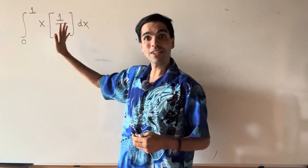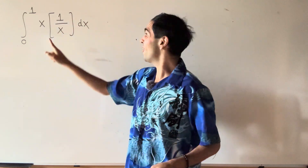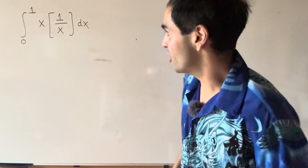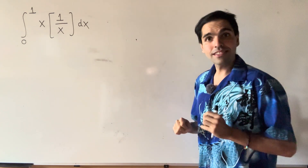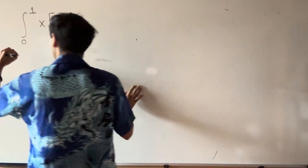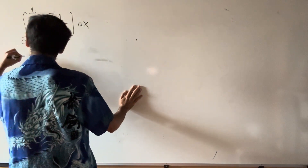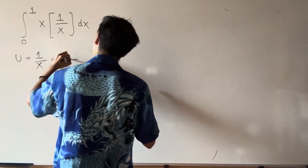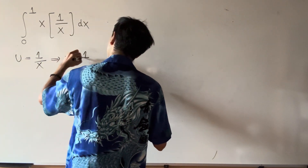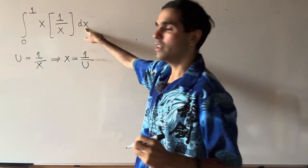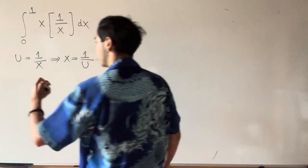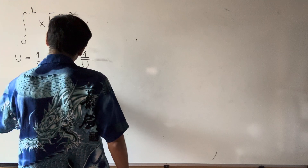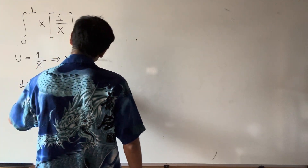The important thing is the answer is not 1, because you cannot cancel out x and 1 over x like that. Instead, let's use a u-substitution. So let u be 1 over x, then x is 1 over u, and then dx is minus 1 over u squared du.